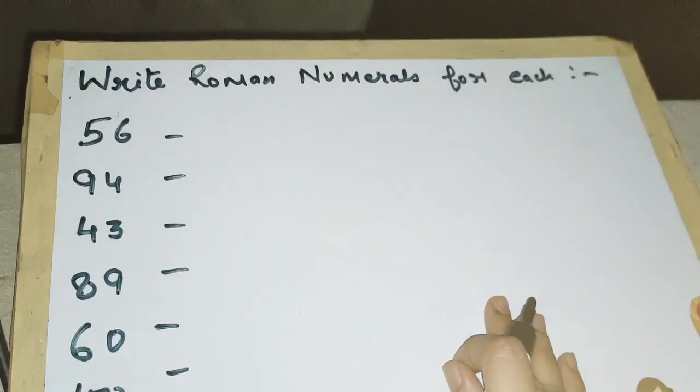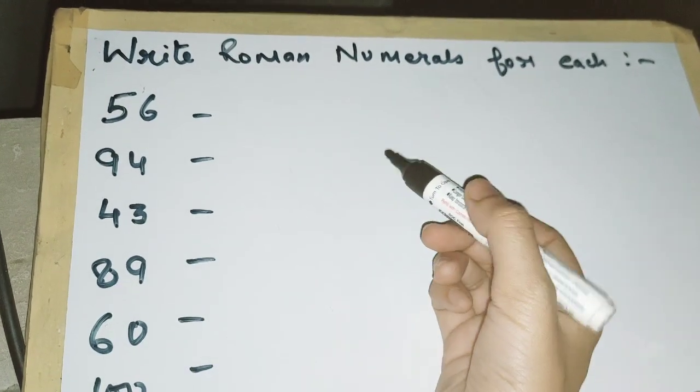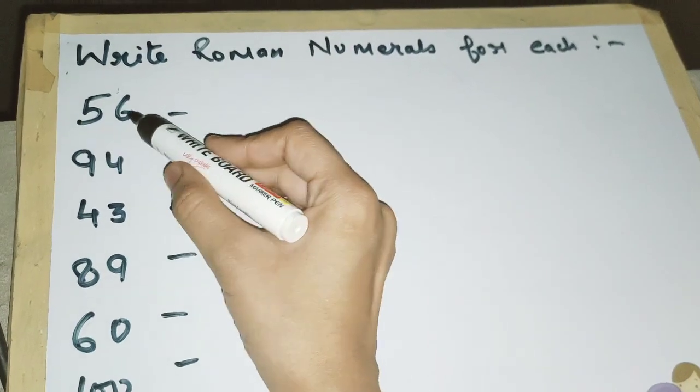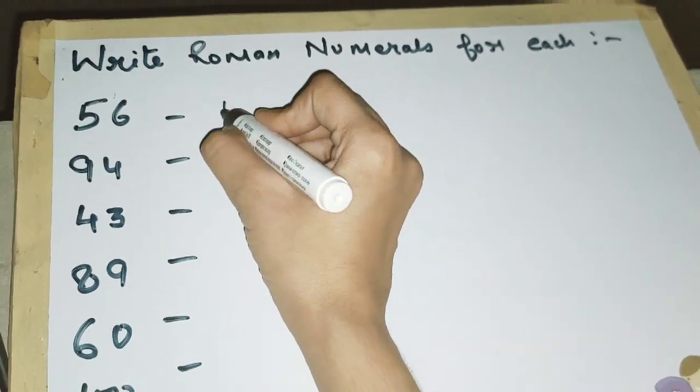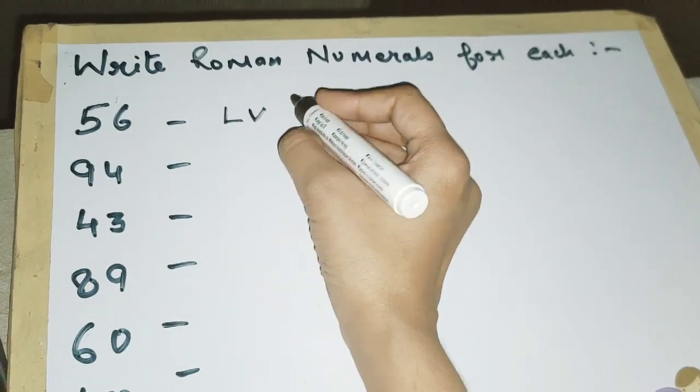In this question, write Roman numerals for each of these Hindu-Arabic numbers. For 56, the value for 50 is L, and for 6 we write V (that is 5) and I (that is 1), so this is 56.